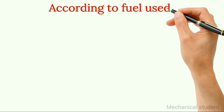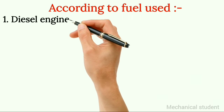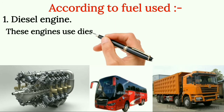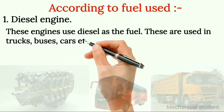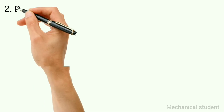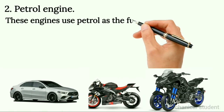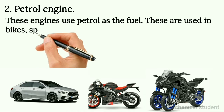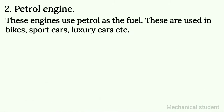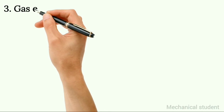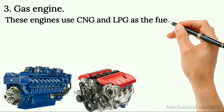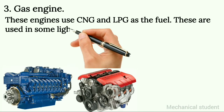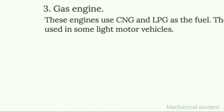According to fuel used. 1. Diesel engine: these engines use diesel as the fuel and are used in trucks, buses, cars, etc. 2. Petrol engine: these engines use petrol as the fuel and are used in bikes, sport cars, luxury cars, etc. 3. Gas engine: these engines use CNG and LPG as the fuel and are used in some light motor vehicles.